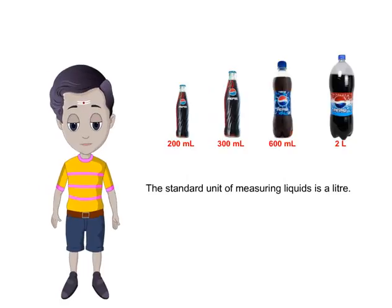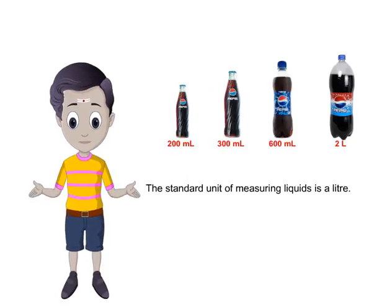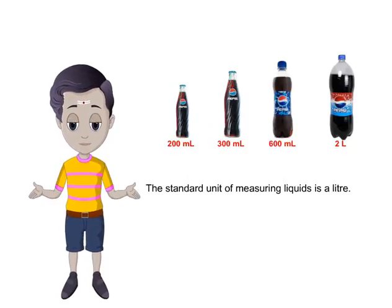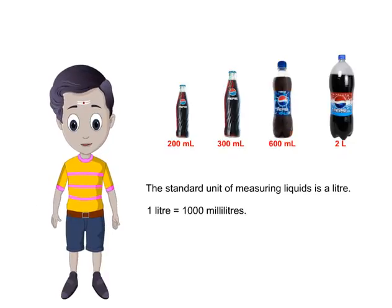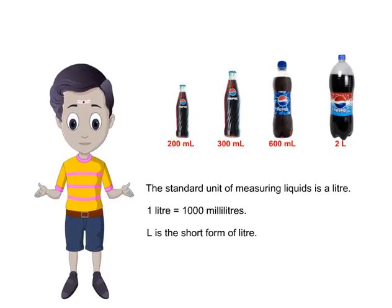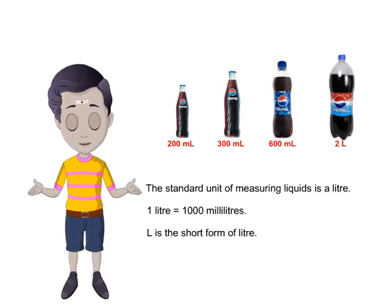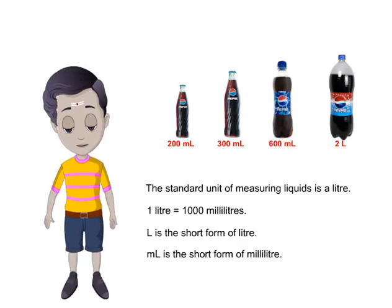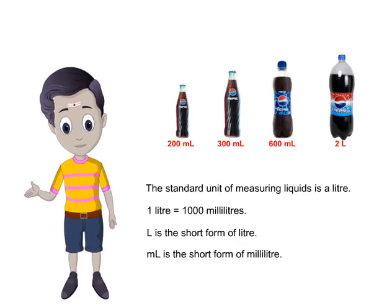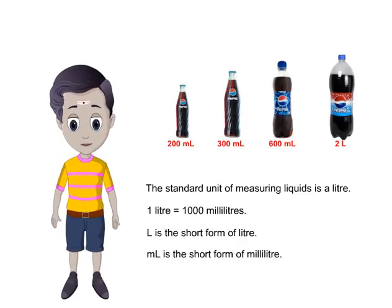The standard unit of measuring liquids is a liter. One liter is equal to 1000 milliliters. L is the short form of liter, and ml is the short form of milliliter.